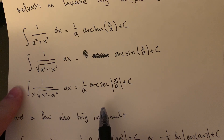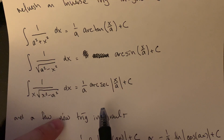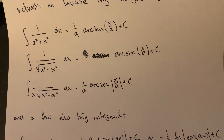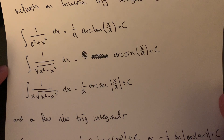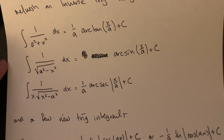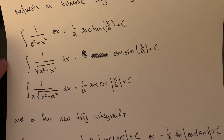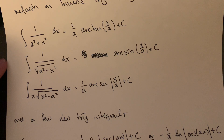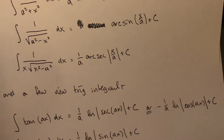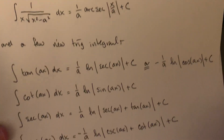The arcsin and arcsec are the easiest to pick out because they have roots, and the terms under the roots are in very specific orders — either the number minus x squared, or x squared minus the number. Those stand out because of that form. The arctan one can be a little less obvious because it doesn't have a root, and the order is arbitrary — you could have 16 plus x squared or x squared plus 25 — so we want to keep that arctan form ready.